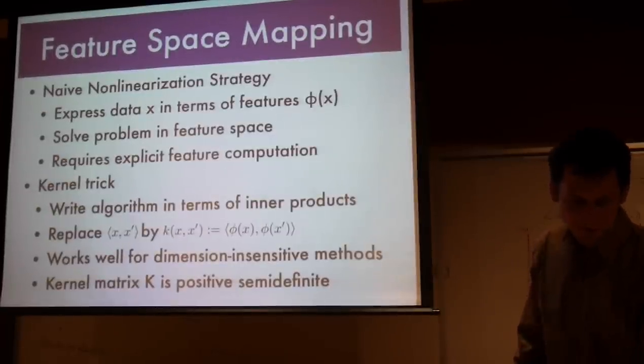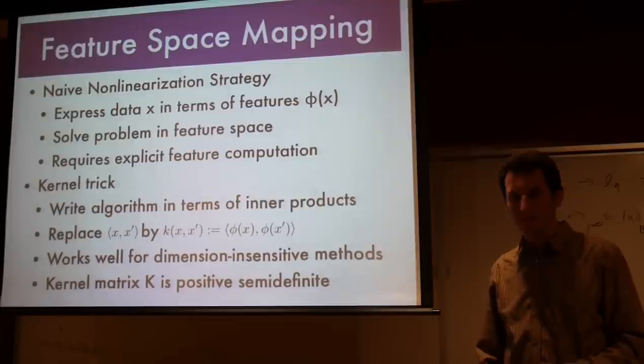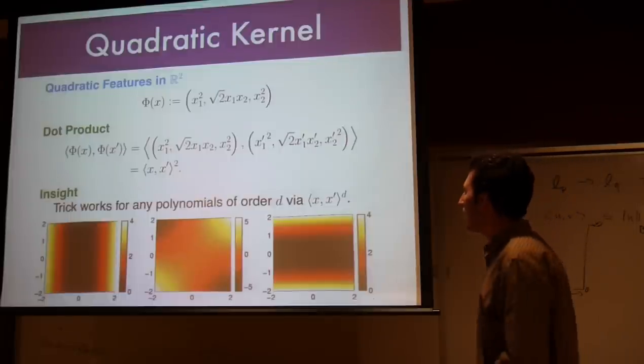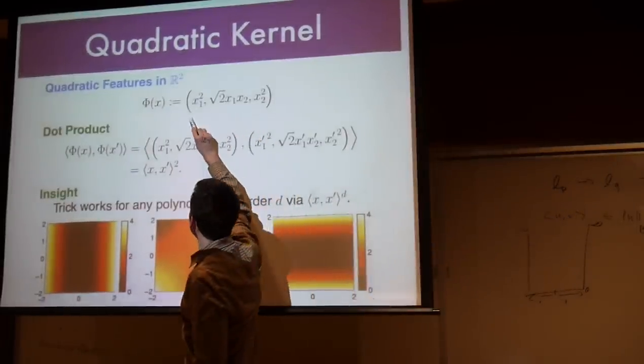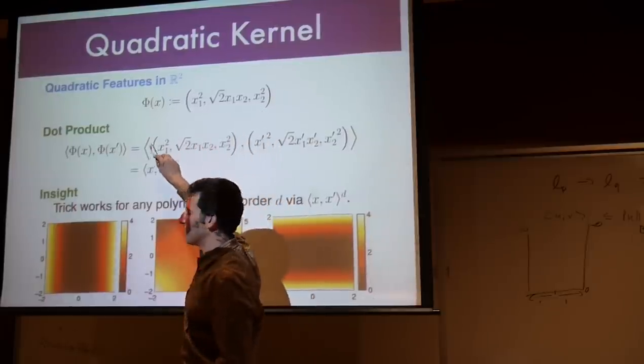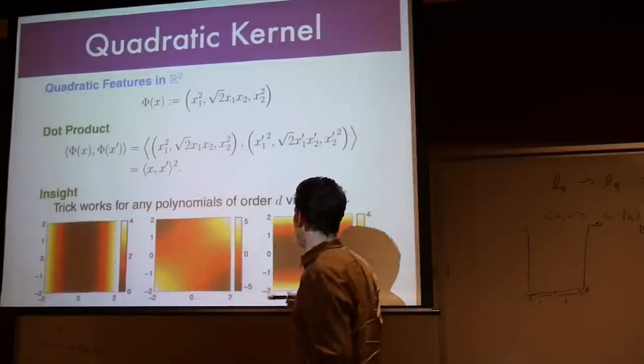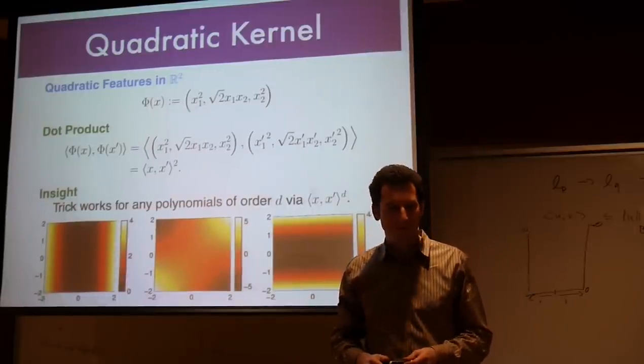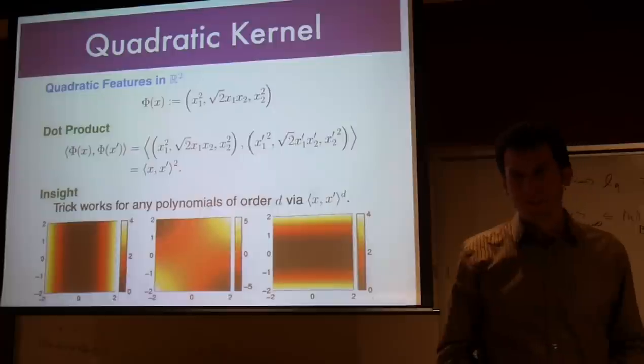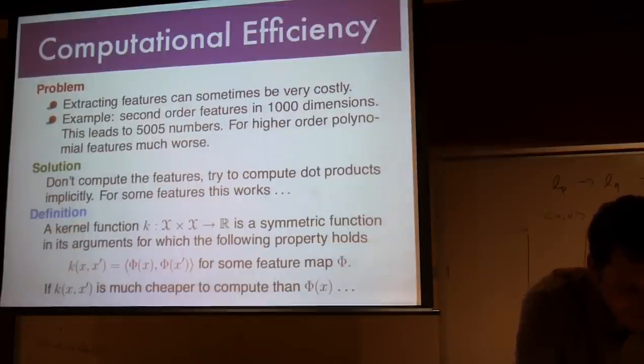Naively, we just express X into phi of X. In some cases, that's actually not so naive in very large-scale problems. In the kernel case, we just compute the kernel function. This is something that we saw last week already. In two dimensions, phi of X is X1 squared, X2 squared, X1 X2, and X2 X1. Then the dot product just happens to turn out nicely, X dot X prime squared. And this works for any polynomials of order D, if you just go through the math.